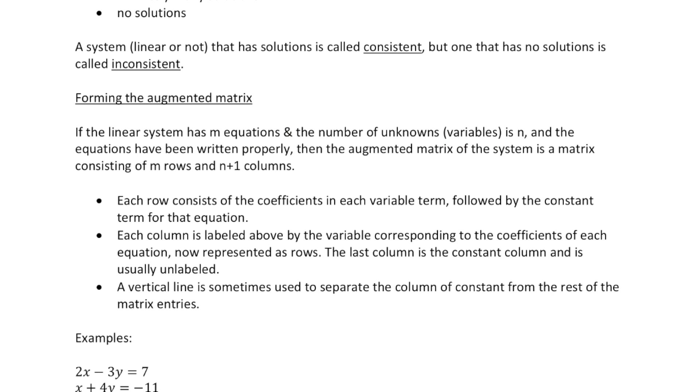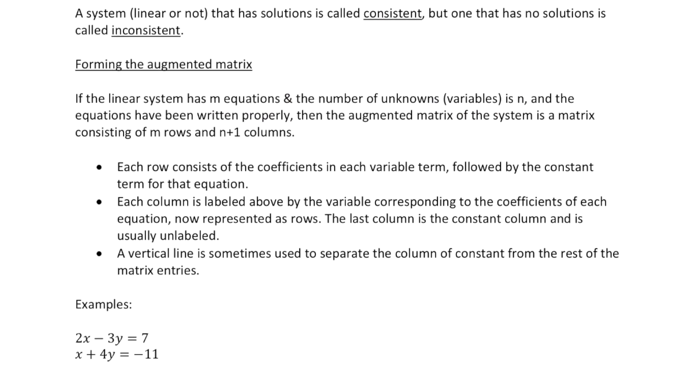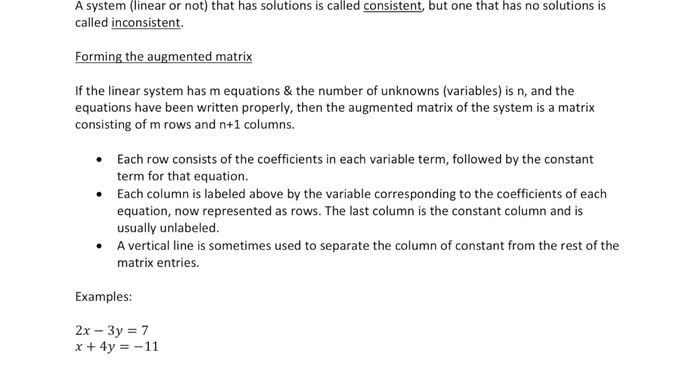For the augmented matrix, each row consists of the coefficients in each variable followed by the constant term for that equation. Each column is labeled above by the variable corresponding to the coefficients of each equation, now represented as rows.